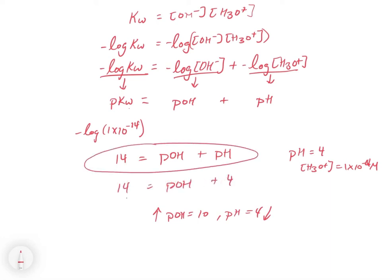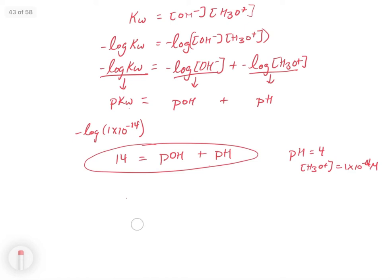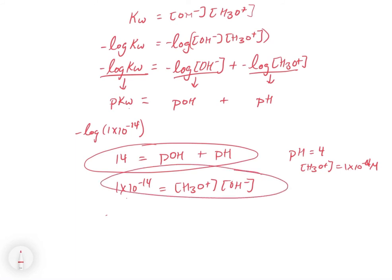So we now have two equivalent equations. We can use 14 = pOH + pH, or we can cast it in terms of concentration: 1 times 10 to the minus 14 equals the concentration of H₃O⁺ times the concentration of OH⁻. They give exactly the same answer — one is in terms of pH and the other in terms of concentration. Use whichever form fits what you're given.